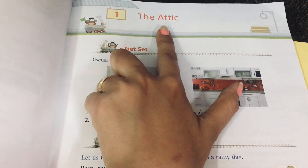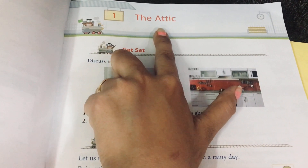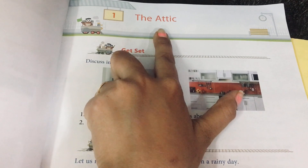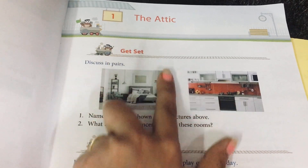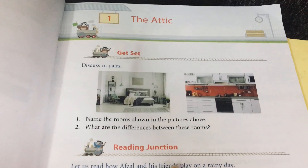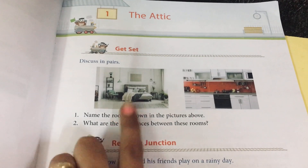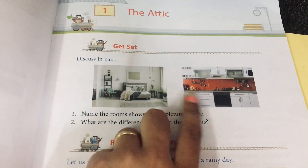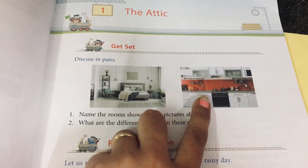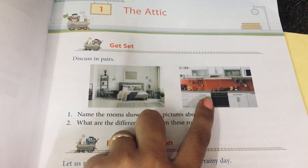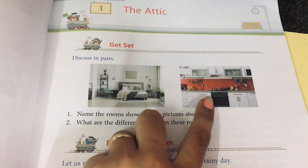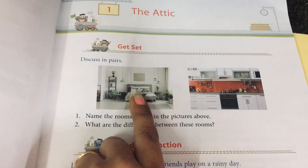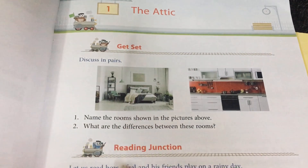What is the meaning of the attic? The attic is the blank space, empty space in the house. Here are two pictures — one is the bedroom and one is the kitchen. The kitchen is used for cooking food and the bedroom is used for rest.